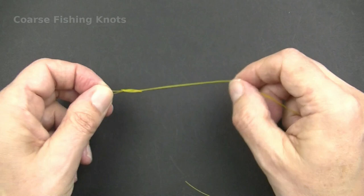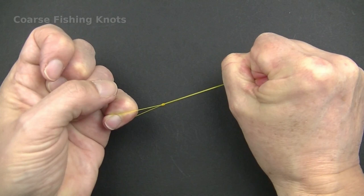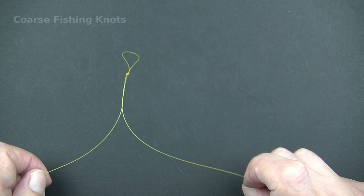This loop is for a snap link swivel. Either include the snap link within the loop or use the loop to hitch a swivel on later.